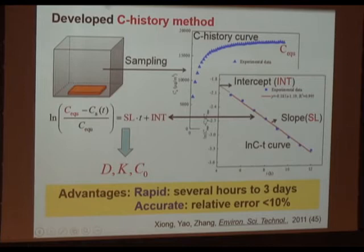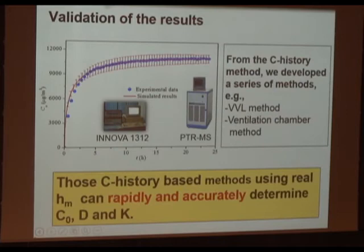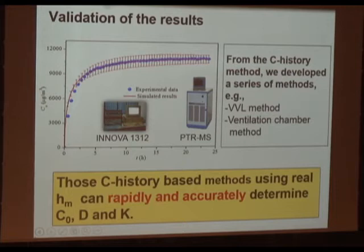The advantage of this method is that it is rapid — it needs only several hours to three days. Tunger just mentioned a method taking three days or longer; our method takes three days or shorter. It is also accurate enough for engineering, with relative error less than 10%. Using our measured data, we predict the chamber concentration and it agrees well with experiments. From the C-history method, we also developed a series of related methods — for example, the VVA method, the ventilation chamber method, and so on.